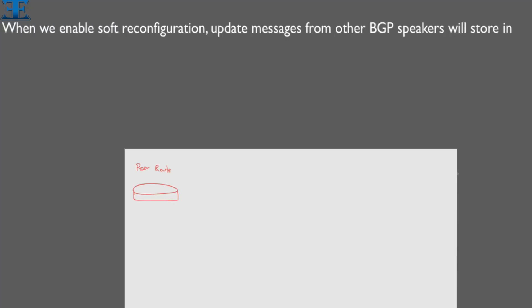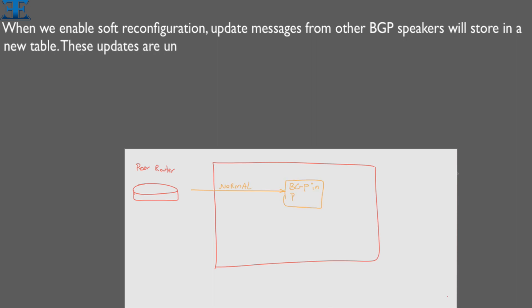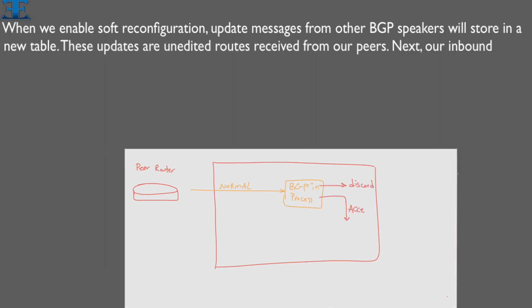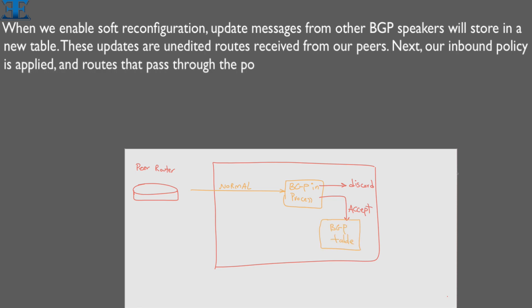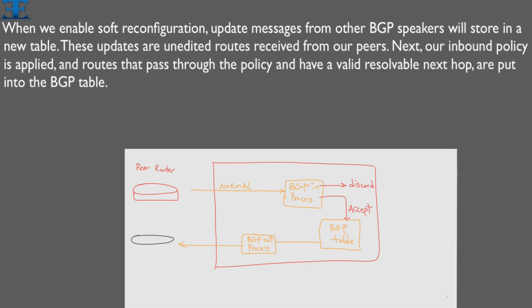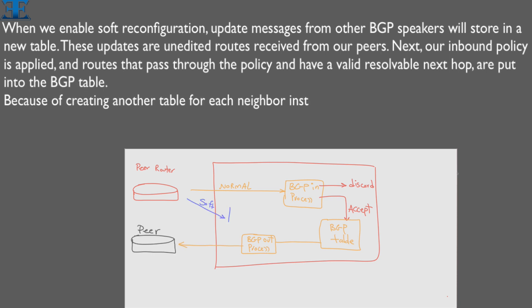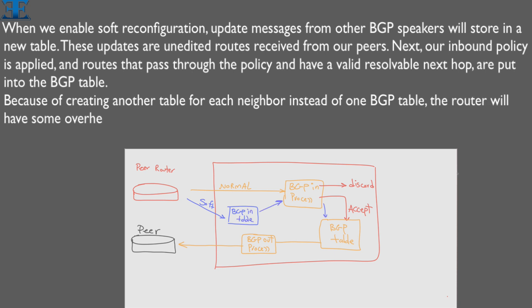update messages from other BGP speakers will be stored in a new table. These updates are unedited routes received from our peers. Our inbound policy is then applied, and routes that pass through the policy and have a valid resolvable next hop are put into the BGP table. Because of creating another table for each neighbor instead of one BGP table, the router will have some overhead and require more memory.